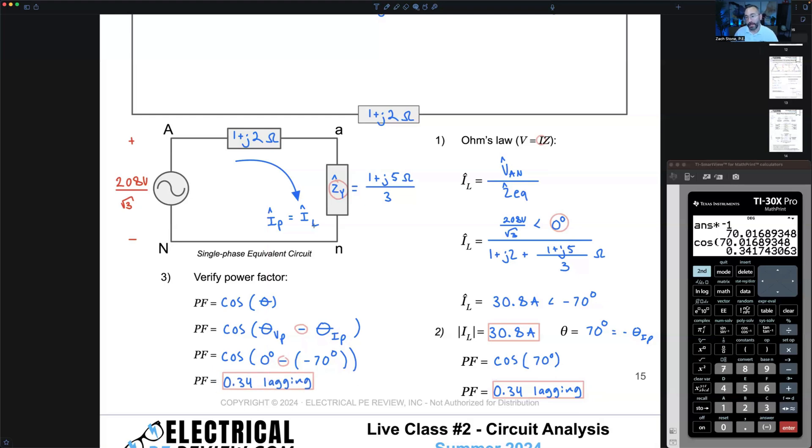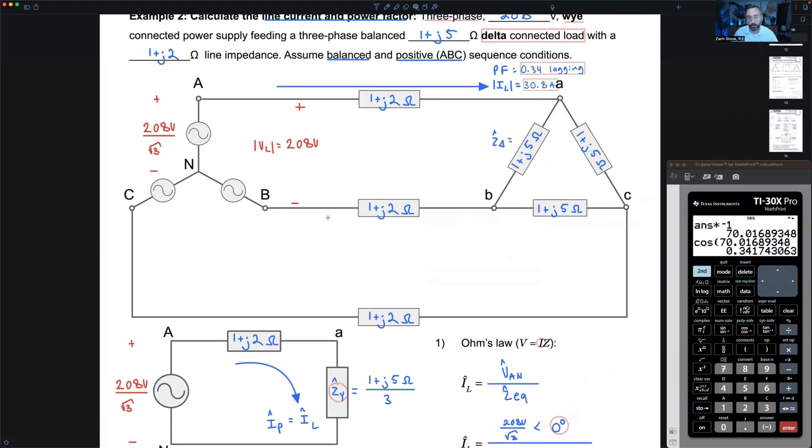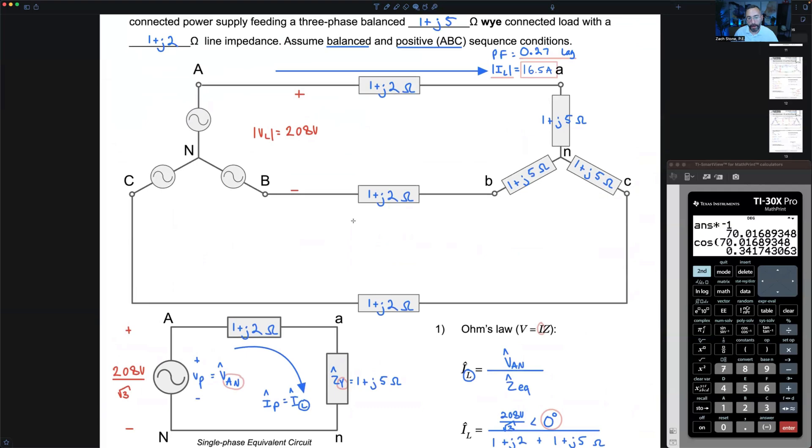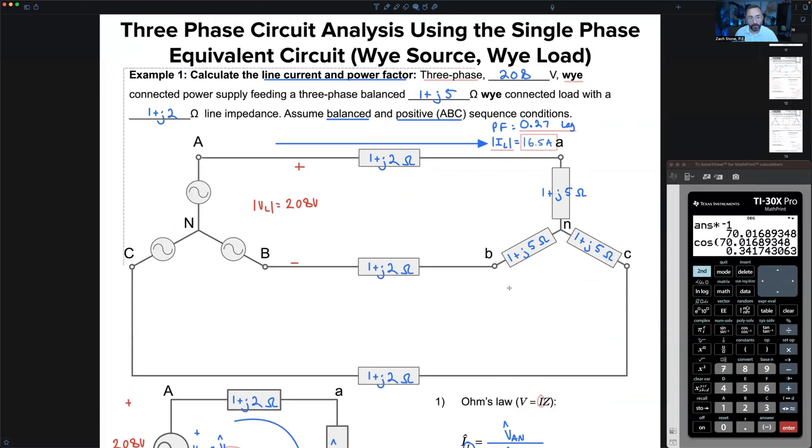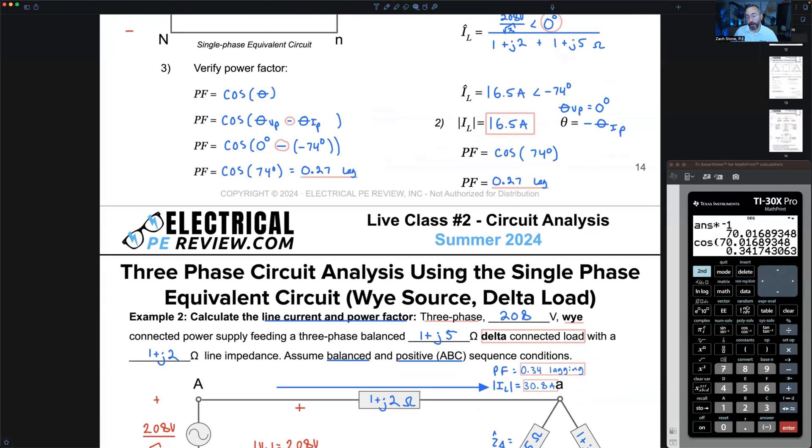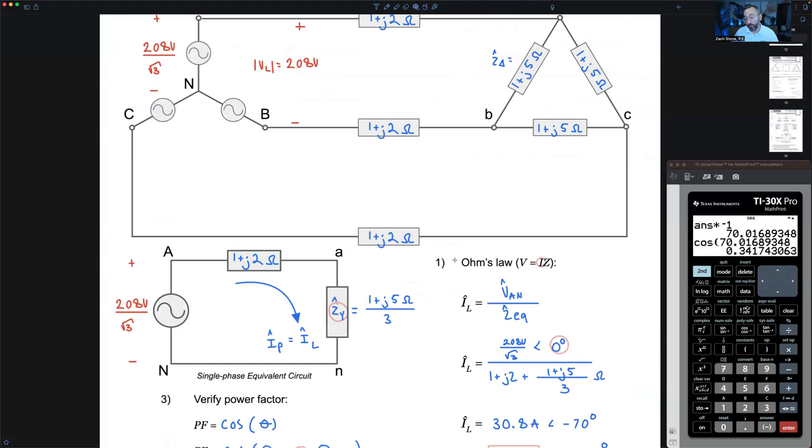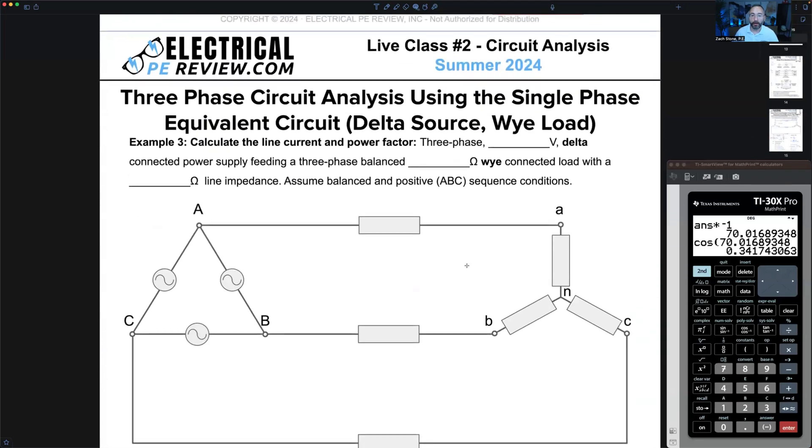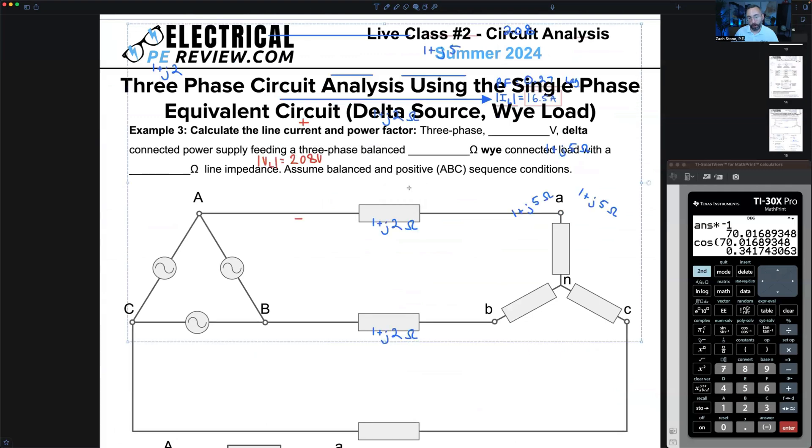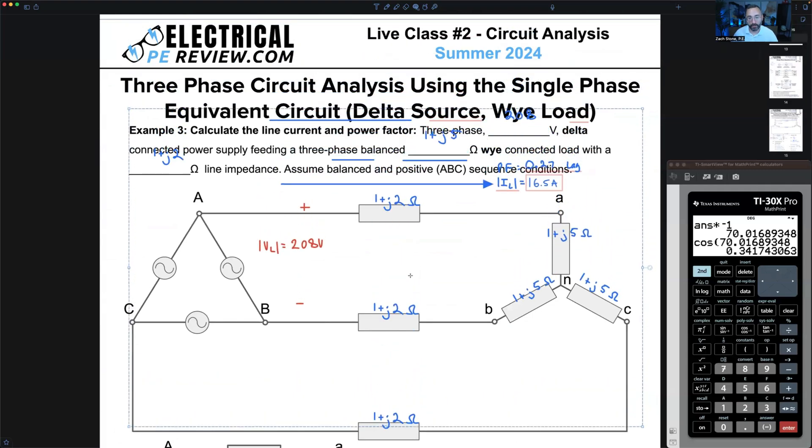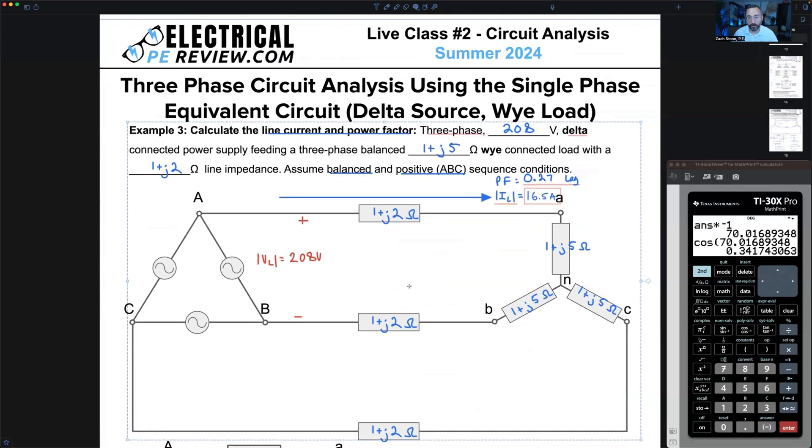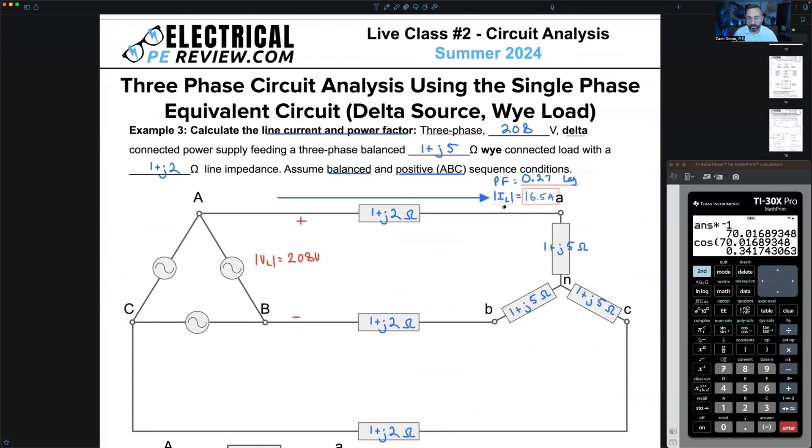What about if we go back to a Y load, but this time we're going to have a delta connected power supply? We already know how to convert from a delta impedance to the Y equivalent, we divide the delta impedance by three. So how do we find our Y equivalent power supply of our delta connection? It's even easier. We're using the same values that we made up on the spot.